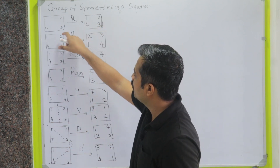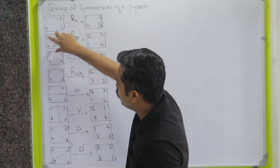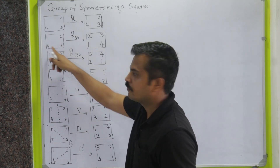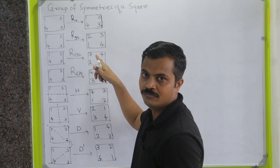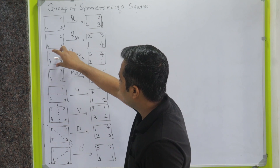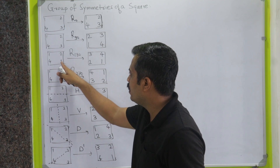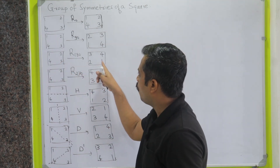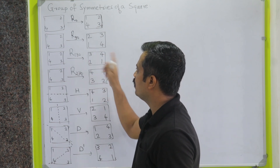If you observe properly: when we rotate the square anti-clockwise by 90 degrees, position 1 moves, and writing labels clockwise from there gives 1, 2, 3, 4. Similarly, rotating by 180 degrees anti-clockwise brings 1 to the opposite corner, and writing labels clockwise from there again gives 1, 2, 3, 4.